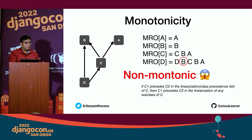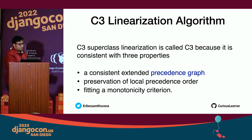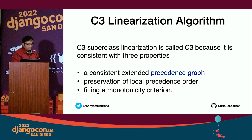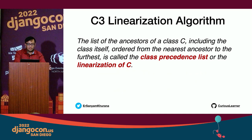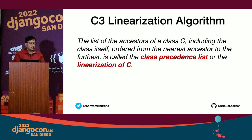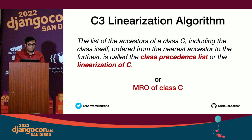C3 actually got its name because it is consistent with three properties: a consistent extended precedence graph, preservation of local precedence order, and a monotonicity criterion. C3 is the list of ancestors of class C, including C itself, ordered from the nearest to the farthest ancestor. It's called the class precedence list, or the linearization of C, also known as the MRO of C.